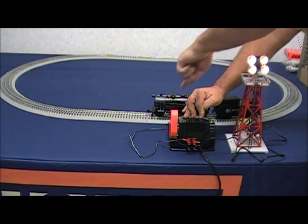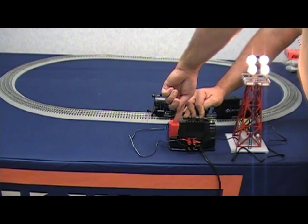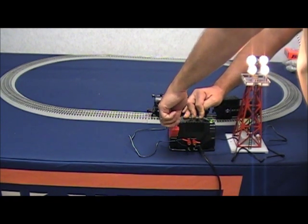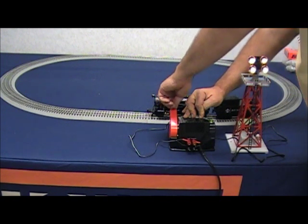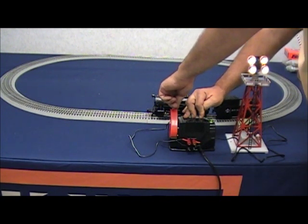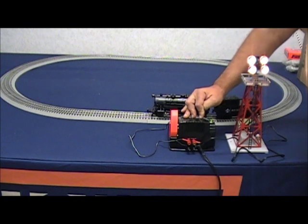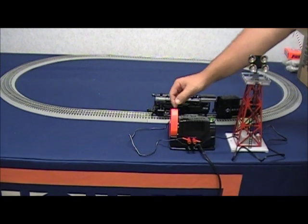As you notice, as I'm increasing the handle of the transformer, the lights get brighter. As I turn it down, they get dimmer. Set the handle to the brightness that pleases you. Release all three buttons.